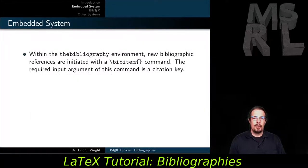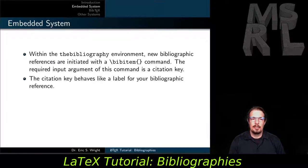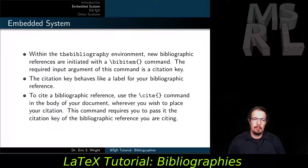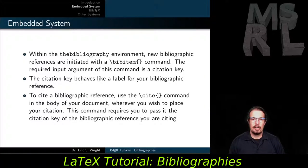Within the bibliography environment, new bibliographic references are initiated with the \bibitem command. The required input argument is a text label, or citation key. The citation key behaves much like a label for your bibliographic reference — it's a reserved label for bibliographic references that works with \cite and \bibitem rather than \ref and \label. To cite a bibliographic reference, use the \cite command in the body of your document wherever you wish to place your citation, passing it the citation key that matches the one you used when you defined a \bibitem.